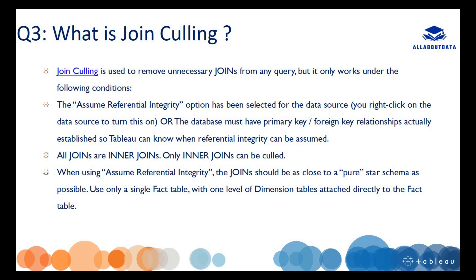Our next question is: what is join culling? Join culling is used to remove unnecessary joins from any query, but it only works under the following conditions: first, the 'Assume Referential Integrity' option has been selected for the data source; second, only inner joins can be culled; and third, when using 'Assume Referential Integrity', the join should be as close to a pure star schema as possible. Basically, join culling and referential integrity are interrelated to each other.